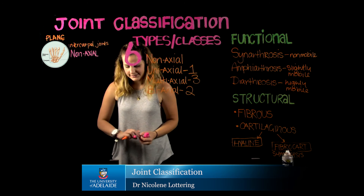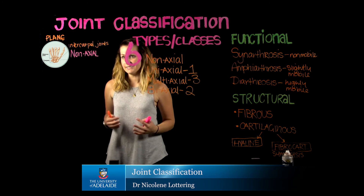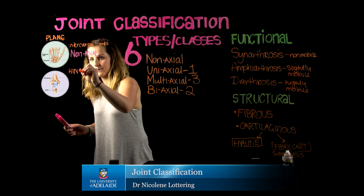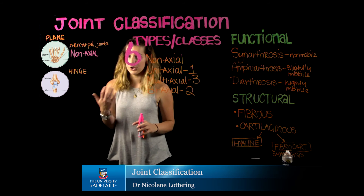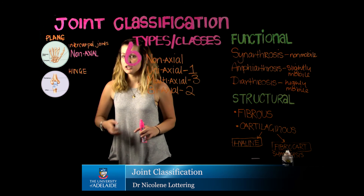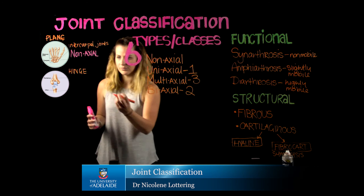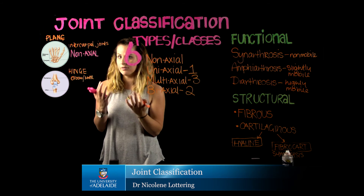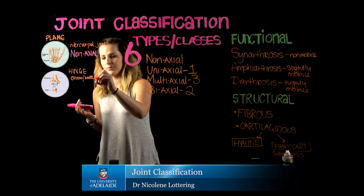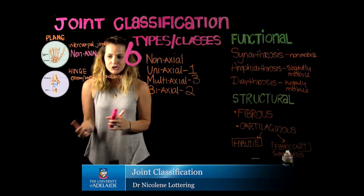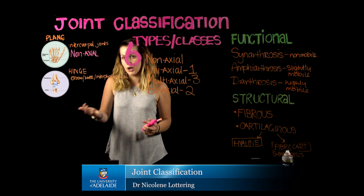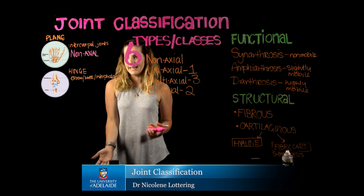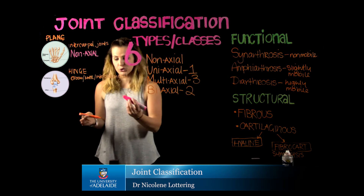The second type of joint is going to be our classic hinge joint. Our hinge joint we find in joints such as the elbow and the knee, or even our interphalangeal joints as we flex and extend our fingers. Because the elbow and knee typically move in only one direction or one plane, we say that this is going to be a uniaxial joint.